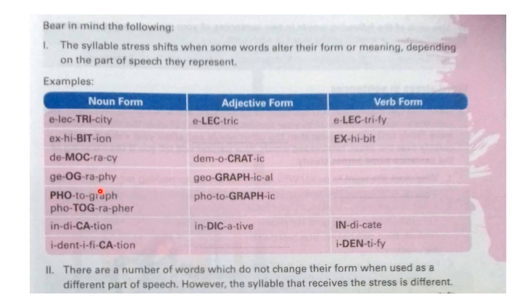Next is 'geography', where the stress falls on the third syllable from the right. Its form 'geographical' — again you find the stress on the third from the right. Now, 'photograph' and 'photographer': if it is 'photograph', the stress falls on the third from the right, and in the case of 'photographer', also on the third from the right. And 'photographic' — here you find the stress falling on the second syllable from the right.